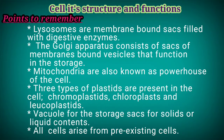Three types of plastids are present in the cell: chromoplasts, chloroplasts, and leucoplasts. Vacuoles are storage sacs for solid or liquid contents. All cells arise from pre-existing cells.